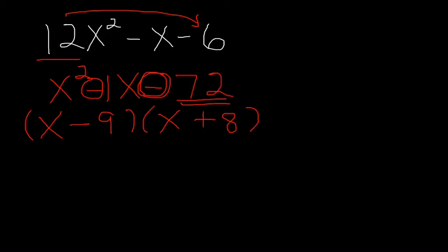Now we're not finished because we factored the new trinomial, not the original one. To finish, we now have to divide both the numbers, the 9 or the negative 9 and the 8, by 12 which was our original lead coefficient. And we need to go ahead and reduce those fractions that were formed. So 9 twelfths would reduce to 3 fourths and 8 twelfths would reduce to 2 thirds.